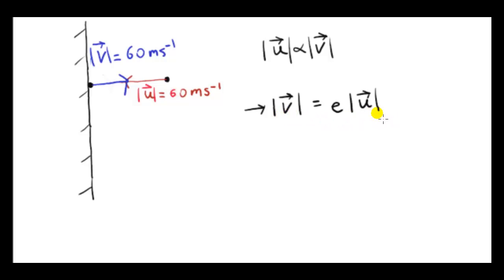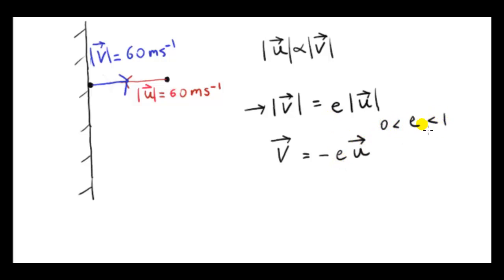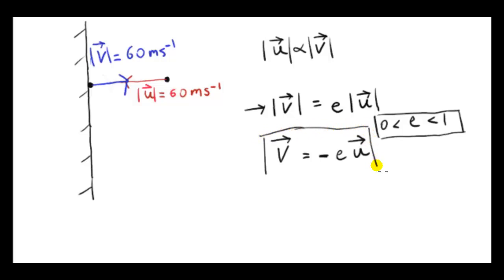Let's write a vector equation to relate the final velocity to the initial velocity, not just the speeds. The velocity vector clearly changes direction, so vector v has got to be a negative scalar times vector u. We stick a minus sign in — e is always a positive number between 0 and 1, so multiplying e by the vector doesn't change its direction, but the minus sign switches the vector. This equation fully describes the relation between velocities, and taking magnitudes gives back the speed relationship.